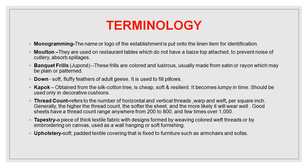Tapestry is a piece of thick textile fabric with designs formed by weaving colored weft threads or by embroidering on canvas, usually used as a wall hanging or soft furnishing. Upholstery refers to soft padded textile covering fixed to furniture such as armchairs and sofas. Terms like upholstery, tapestry, and drapery are very often used for furnishings. Drapery refers to things which are hung — for example, curtains — but these terms are very often used as synonyms.